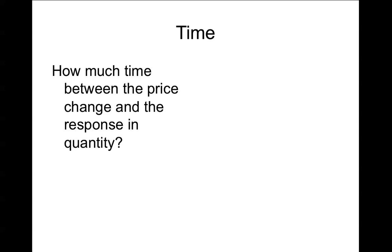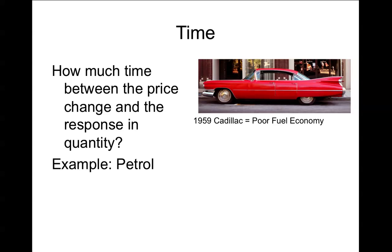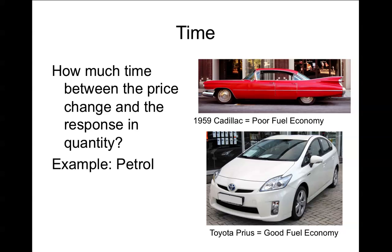The next determinant is time — how much time is there between the change in price and the response in quantity demanded? If I drive a 1959 Cadillac Eldorado with a V8 engine and poor fuel economy, in a week I'm not going to have much choice if the price of petrol goes up — I just have to pay it. But over a year, I might think to sell it and buy a more fuel-efficient car like a Toyota Prius. The rule: the more time you have, the more elastic the product is going to be.